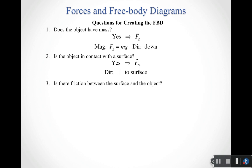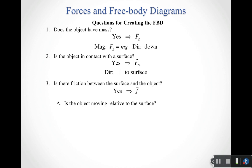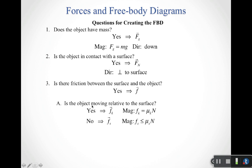The next question: is there friction between the surface and the object? Some surfaces we'll treat as frictionless, in which case the answer is no. If the answer is yes, we need to draw in a friction force. Then we ask: is the object moving relative to the surface? If it's sliding, we have kinetic friction; if it's not sliding, we have static friction.